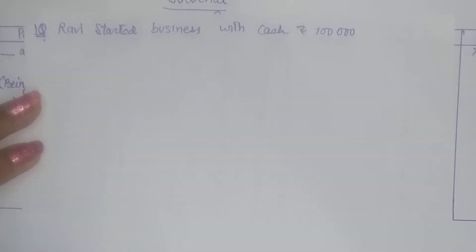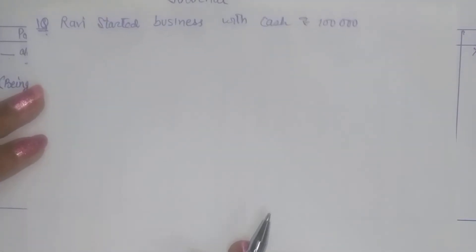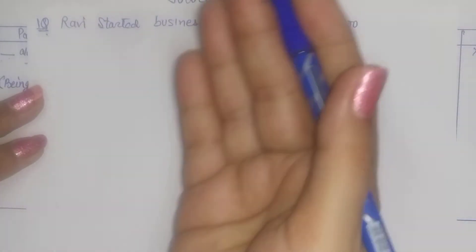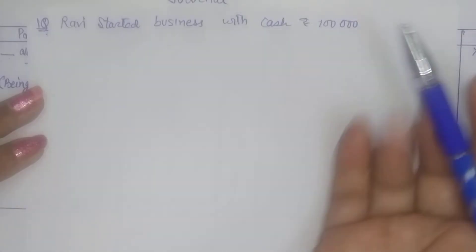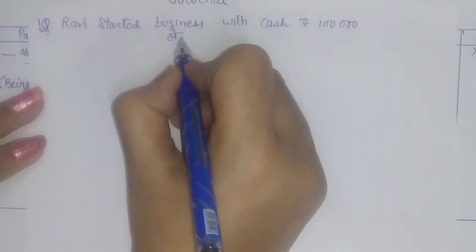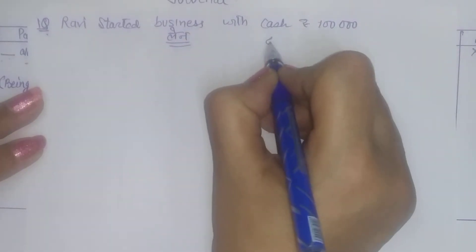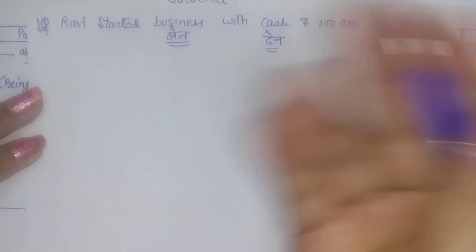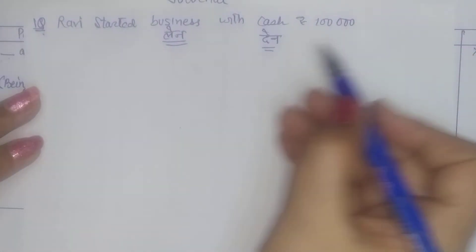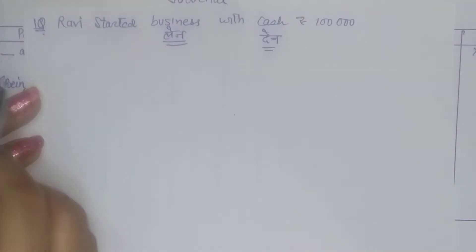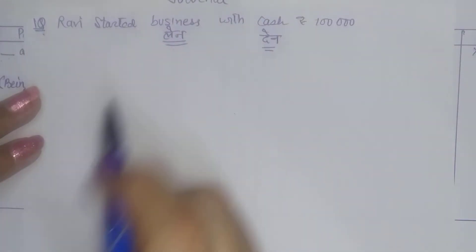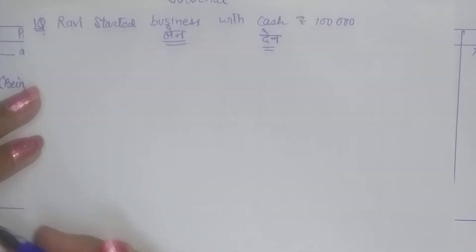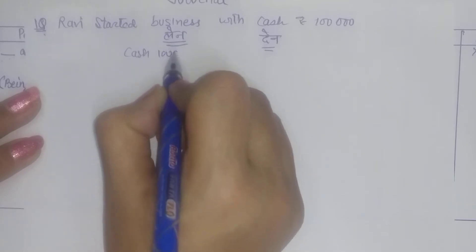In business, it is never only giving or only taking — in business there is always give and take. What did you give, what did you receive? Now think from the business point of view: when Ravi started a business and put money in it, what did the business get? What did it receive? Cash — one lakh. What did it give? We need equality here. If something is taken, something must be given. If you did not pay directly, it becomes payable — it will have to be paid later when the businessman withdraws money. So it becomes a payable — capital liability.